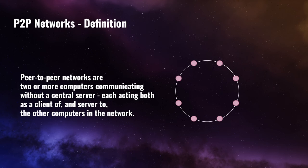Let's start with a definition of what peer-to-peer networks are. Peer-to-peer networks are two or more computers communicating without a central server, each computer acting both as a client of and server to the other computers in the network.